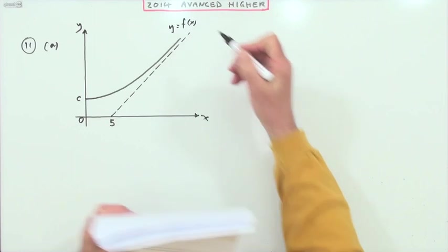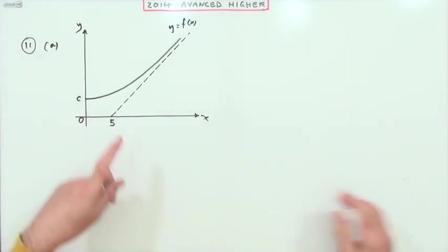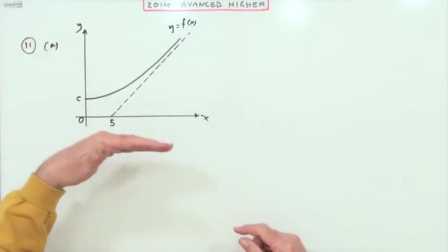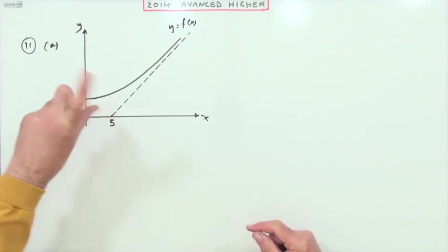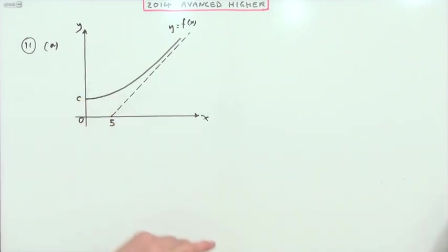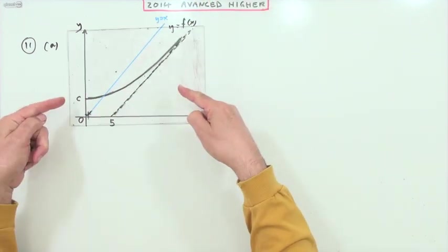Now the inverse simply means switching the answers for the inputs, so interchanging the x and y axis, or flipping over the line y equals x. There's the line y equals x.